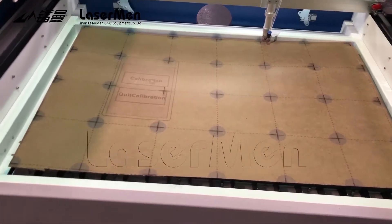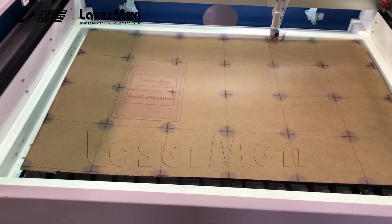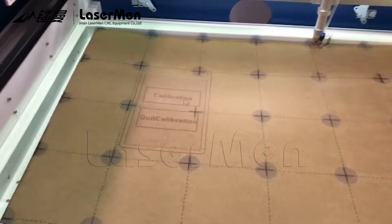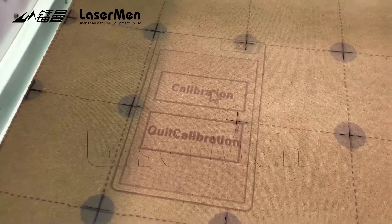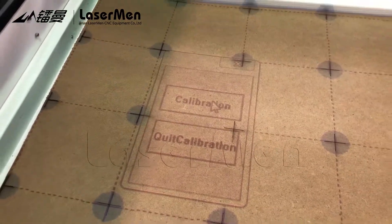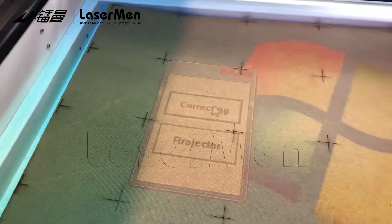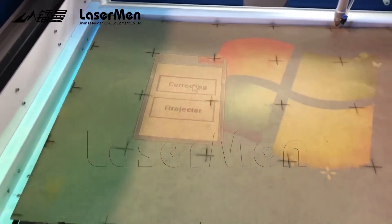So when you make the calibration, make it as more accurate as possible. Then you will click on calibration. Now I will click on calibration.